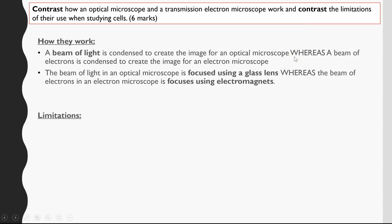If you only talk about one side — say, just about the optical microscope and not the electron microscope — you won't get the full marks. For how they work: 'A beam of light is condensed to create the image for an optical microscope, whereas a beam of electrons is condensed to create an image for an electron microscope.' The next point: 'A beam of light in an optical microscope is focused using a glass lens, whereas it's electromagnets for the electron microscope.' That's two points straight away, addressing the first part of the question.